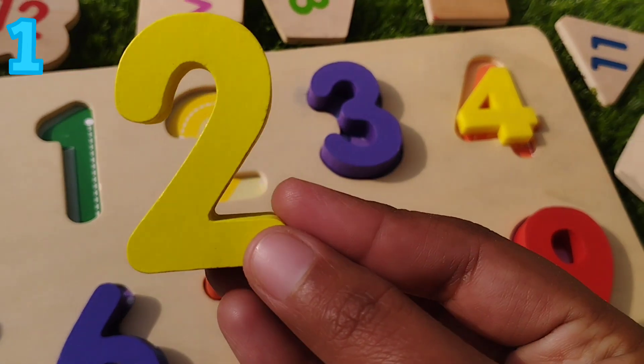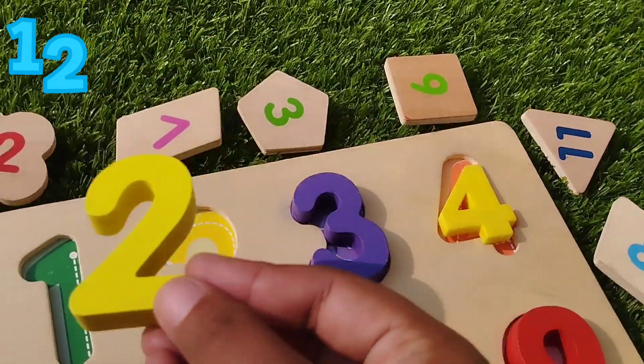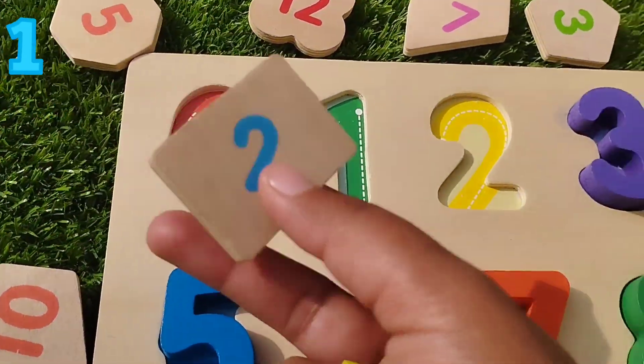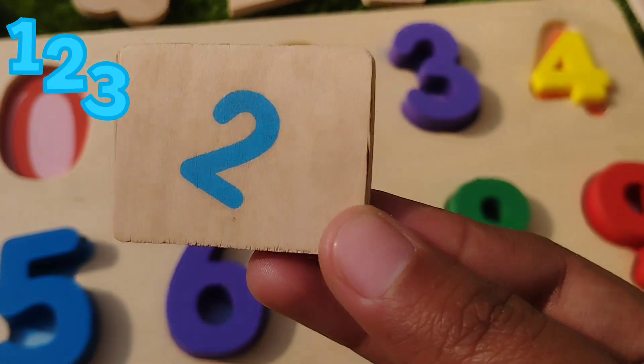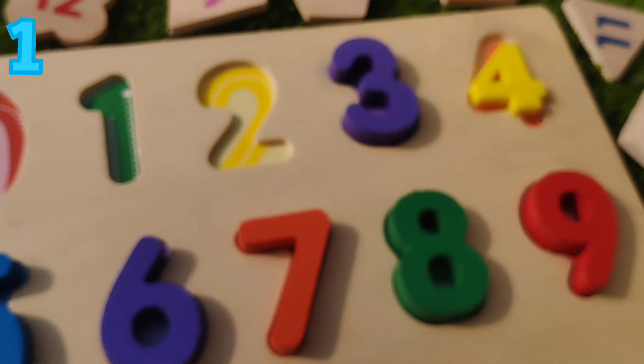The next number is number 2. Where is number 2? Yes, we find it. This is a rectangle. A rectangle shape and the number is 2.